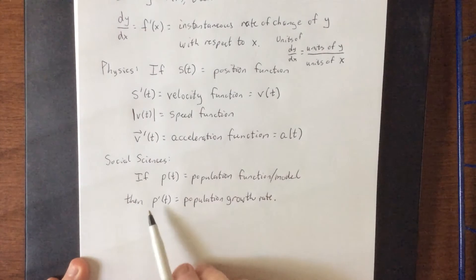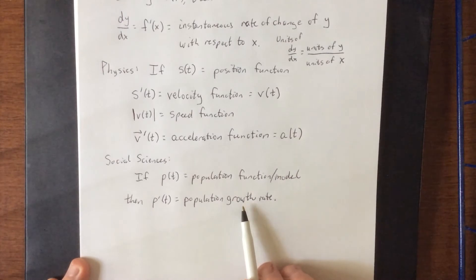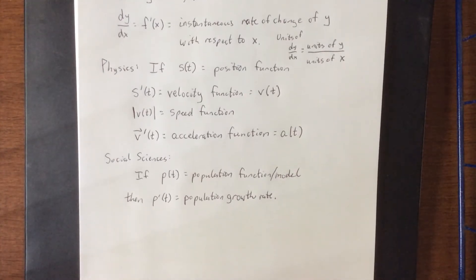Now, this of course assumes that p prime of t is positive, that it would be a growth model. If you calculated p prime of t and you wound up with a negative, it would be a population decay model, the rate at which the population is declining.